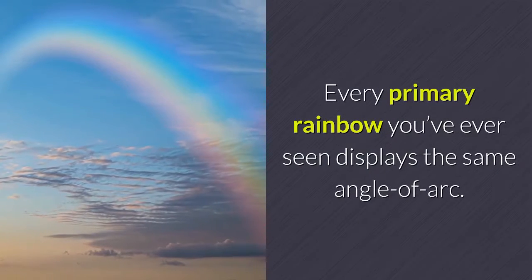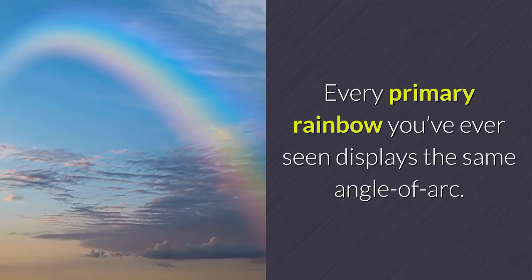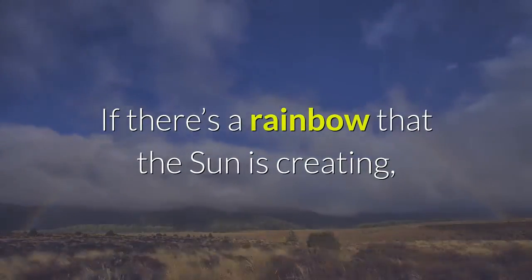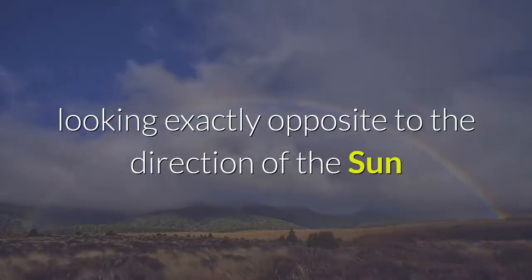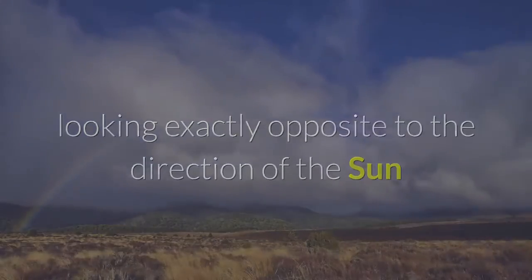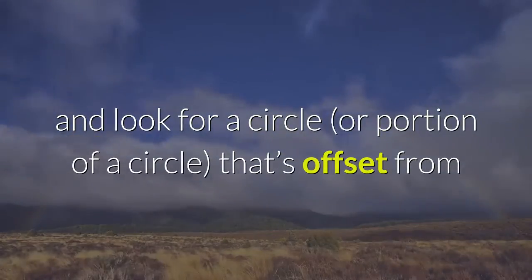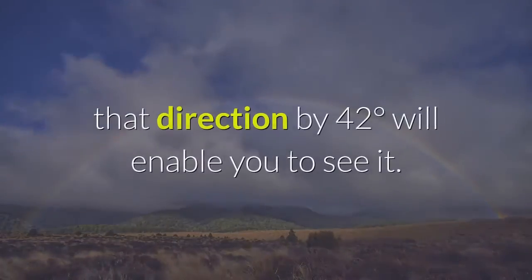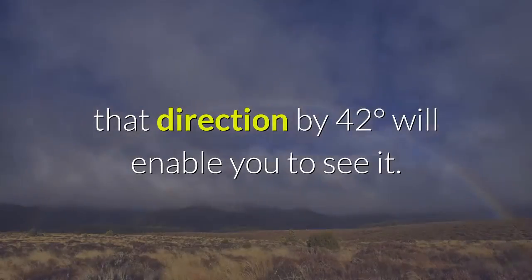Every primary rainbow you've ever seen displays the same angle of arc. If there's a rainbow that the sun is creating, look exactly opposite to the direction of the sun and look for a circle, or portion of a circle, that's offset from that direction by 42 degrees to see it.